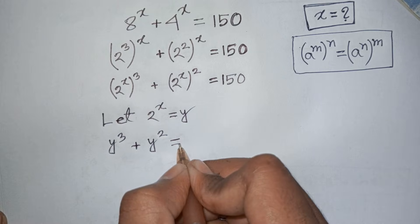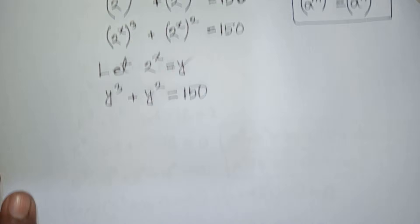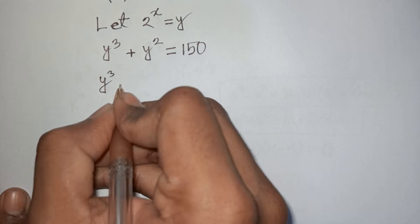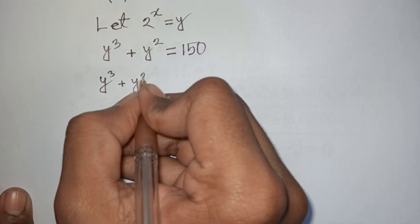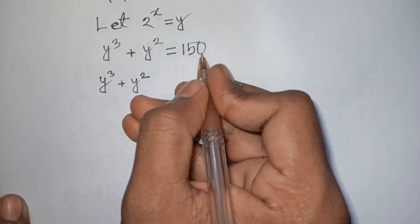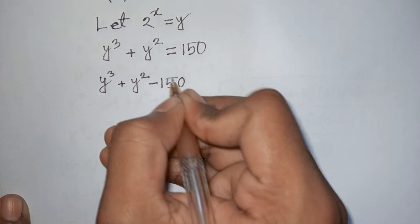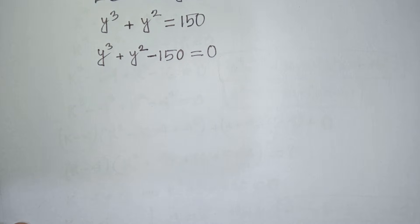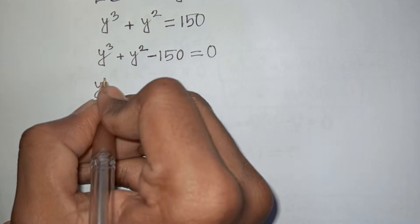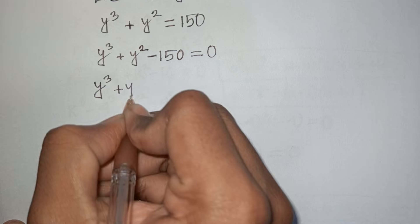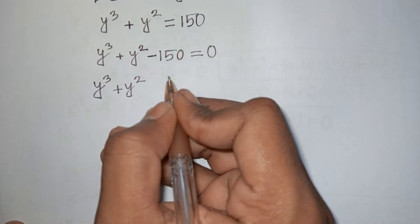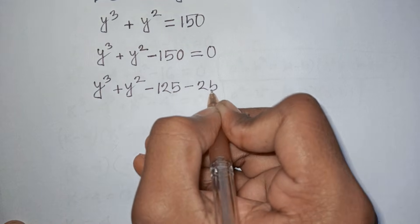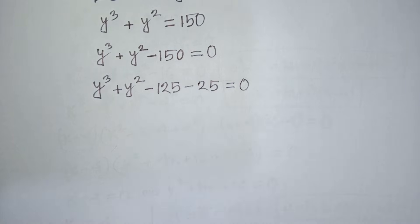So y³ + y² = 150. Taking 150 to the left side gives y³ + y² - 150 = 0. In the next step, -150 can be written as -125 - 25, so we have y³ - 125 + y² - 25 = 0.